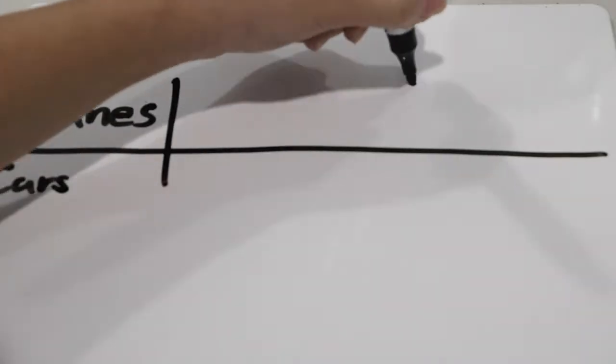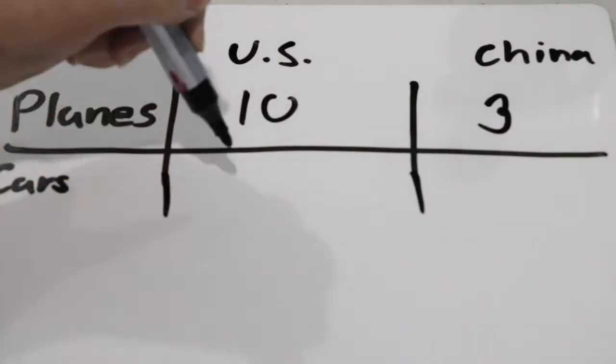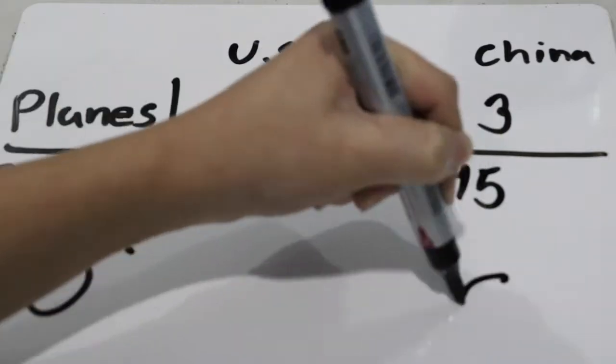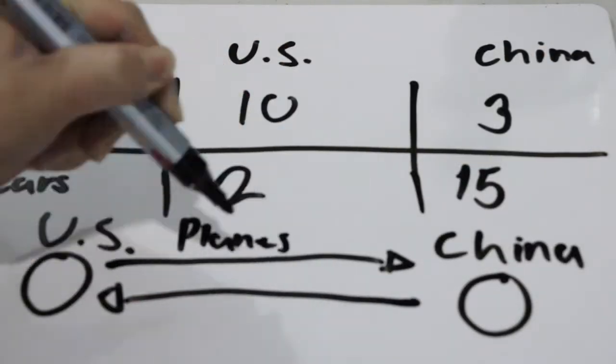Yeah. Out of all these things we've said, why should countries specialize? Countries should specialize so that when a country creates a good, they will not waste any opportunity when making another good, and that is called opportunity cost.